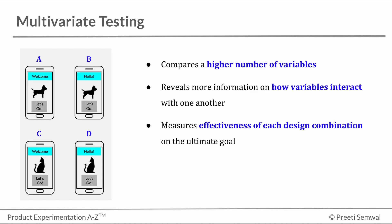The purpose of a multivariate test is to measure the effectiveness each design combination has on the ultimate goal. Once a site has received enough traffic to run the test, the data from each variation is compared. This will show which is the most successful design combination and potentially reveal which element has the greatest positive or negative impact on a visitor's interaction.